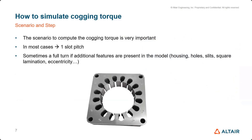The scenario part is very important for cogging torque. In most cases it will be periodic, so we can solve for one slot pitch. But sometimes you may require a much longer scenario — for example, if we have a housing that is not circular or periodic, or if we have holes and slots near the tooth, square laminations, or eccentricity. For all these cases, we may require a longer scenario, possibly one full mechanical turn.